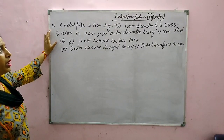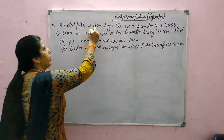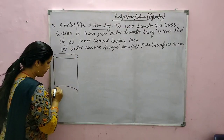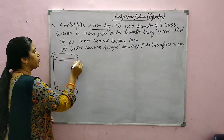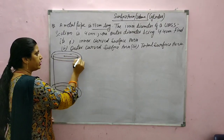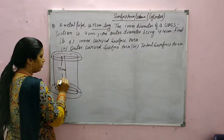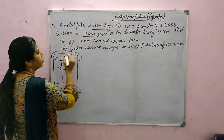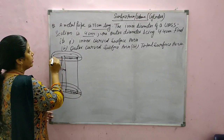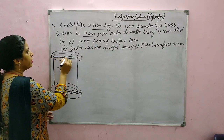Now we will do this question based on surface area of cylinder. A metal pipe is 77 cm long. Drawing the figure: there are two circular parts and the height is the same. The length is 77 cm. The inner diameter is 4 cm, and the outer diameter is 4.4 cm.